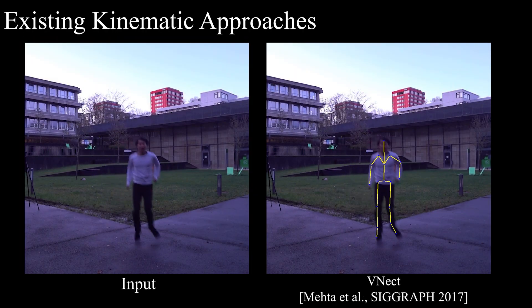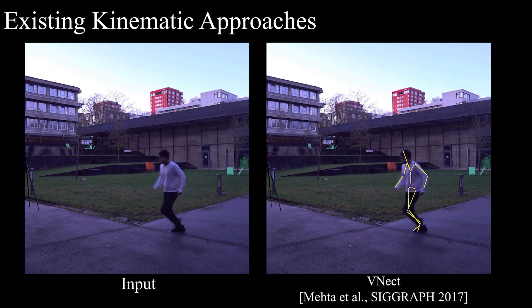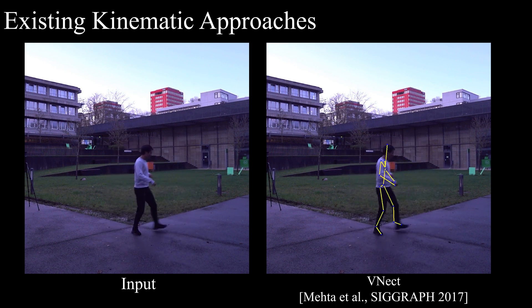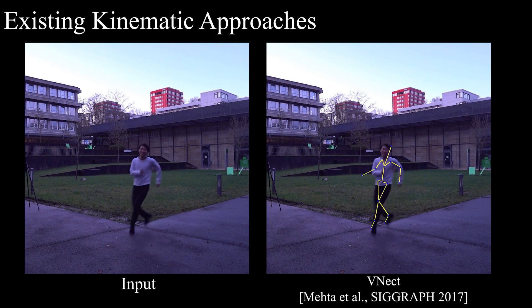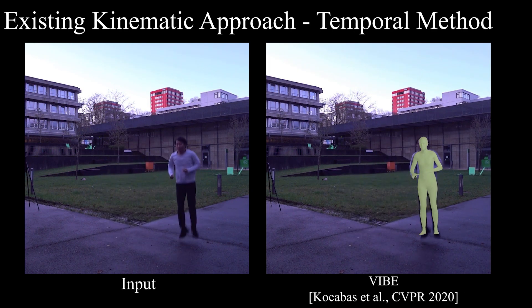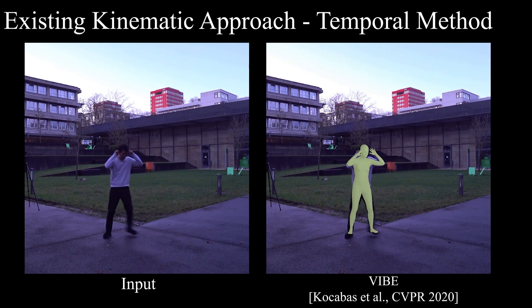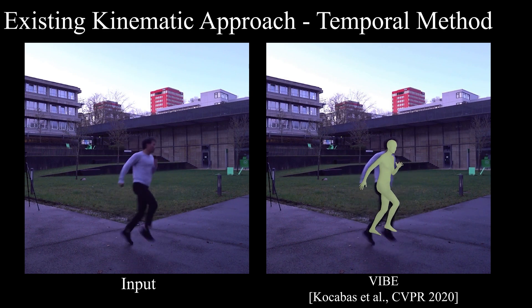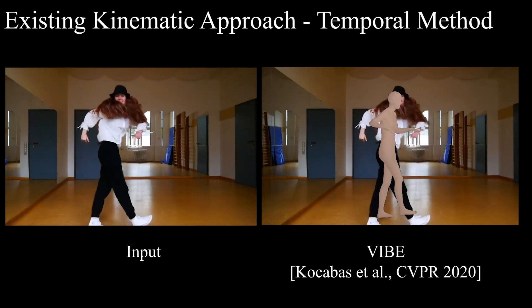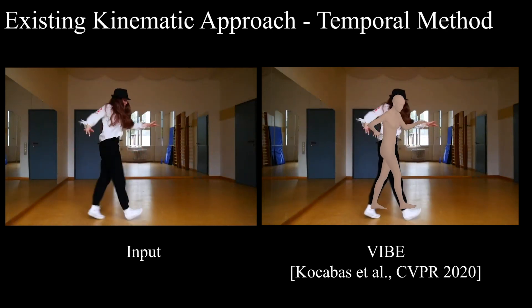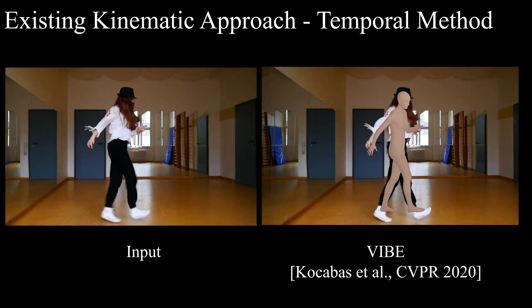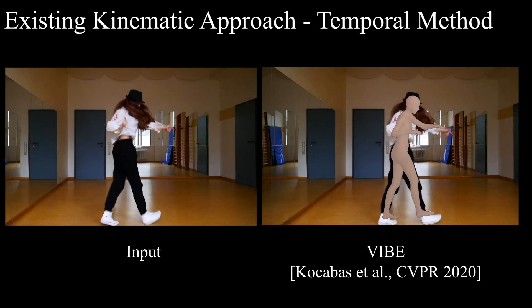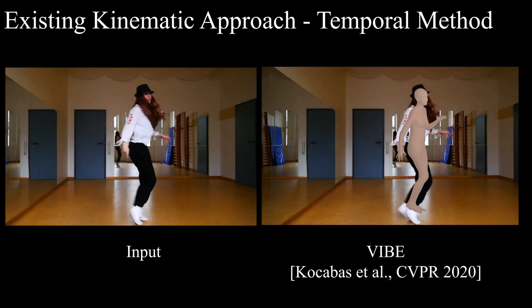Most approaches are purely kinematic, which means that they only consider geometric fidelity of the reconstructed motions but not physics-based constraints of the real world. Introducing temporal constraints can improve the results, as can be seen here. However, reconstruction of fast motion such as dancing is still challenging for these methods. Consequently, the captured motions are unnatural and show various artifacts such as jitter, biophysically implausible postures and collision violations.